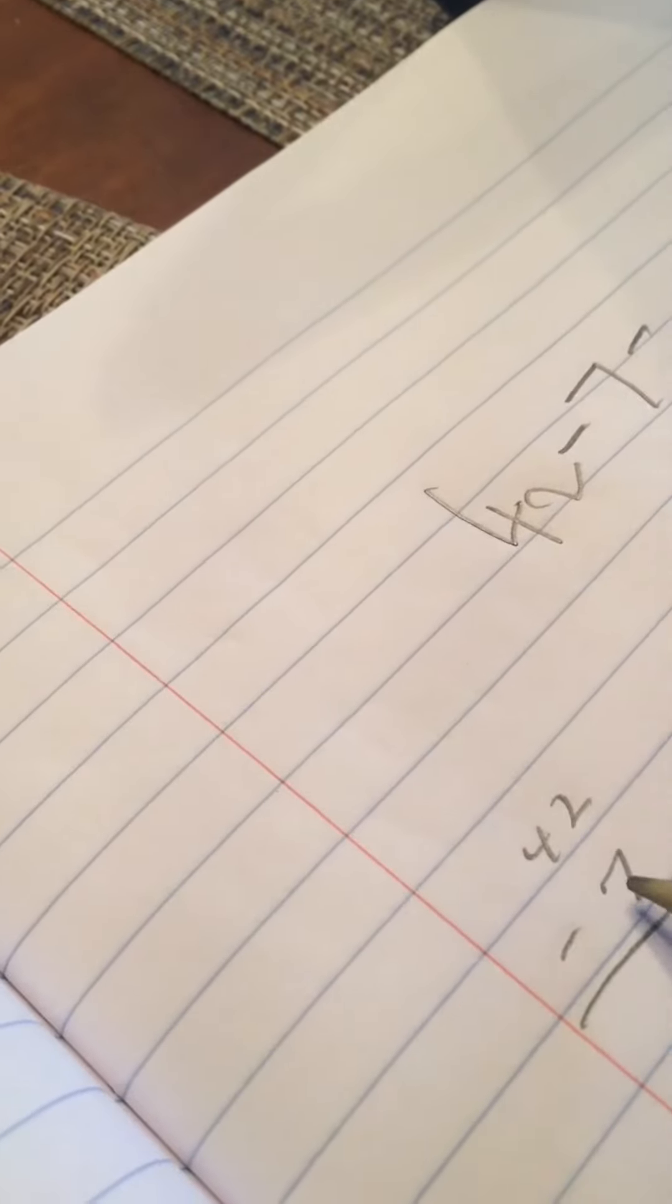And the 2 is less than 7, so it's 12. Okay, so let's do it. 12 minus 7. Let's write 12 minus 7.